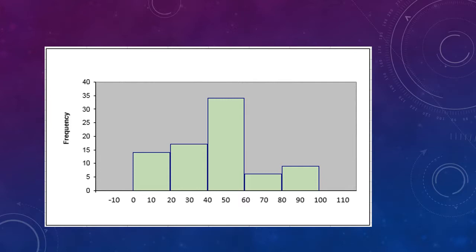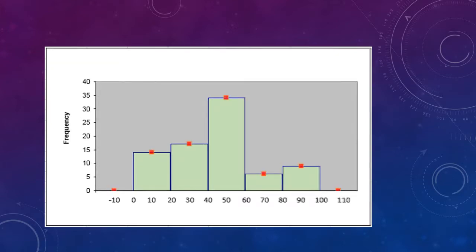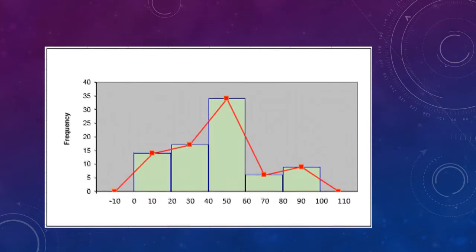The next step is quite simple. I'm simply going to indicate the midpoint of each of those boxes with a dot on the top of the box. The two endpoints, of course, are going to be way outside those boxes, and so they'll get a dot right down at 0. The last step — just connect the dots, and what you've got there is the frequency distribution for this data.